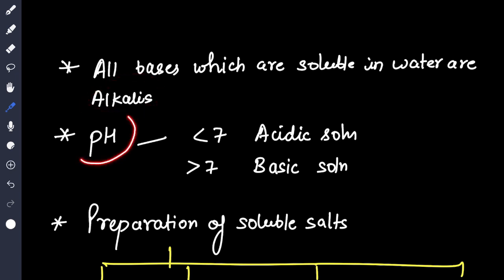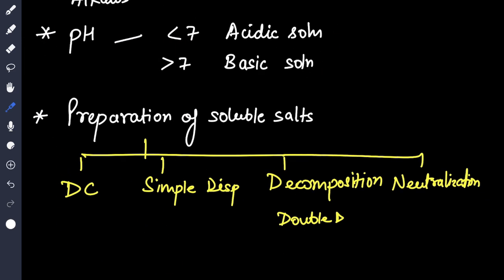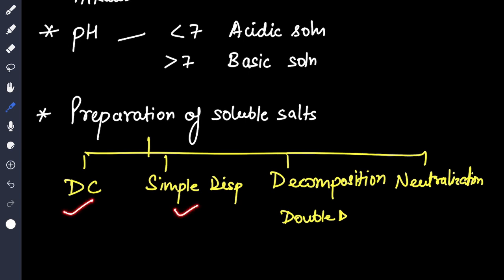All bases which are soluble in water are alkalis. The pH value when it is less than 7 is acid solution, greater than 7 it is basic solution. Questions on preparation of soluble salts like direct combination, simple displacement, decomposition, double decomposition, neutralization. They'll give you a reaction and then ask you which type of reaction is this.